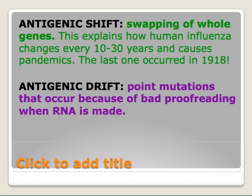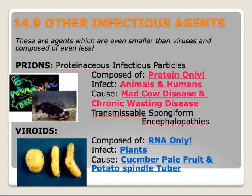The next thing I want to talk about are other infectious agents — agents which are even smaller than viruses and composed of even less. Remember that viruses are composed of protein and either DNA or RNA. Prions are named so because they are considered proteinaceous infectious particles. They are composed of only protein, and they infect typically animals and humans. The most common examples are mad cow disease and chronic wasting disease in deer.